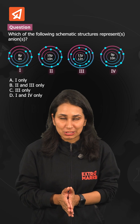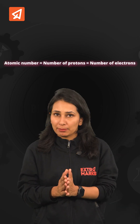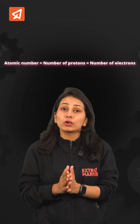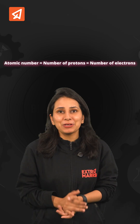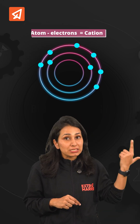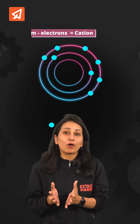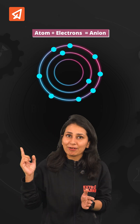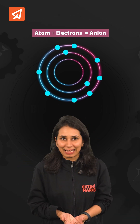We understand their formation. Atomic number tells the number of protons, and in neutral atoms, the number of electrons is the same. But when the atom loses or gains electrons, it becomes an ion. If it becomes a positive ion, it becomes a cation. And if electrons are gained, it becomes a negative ion, that is an anion.